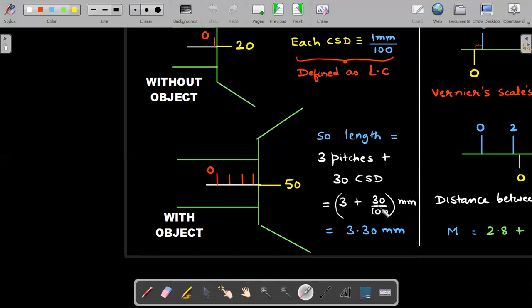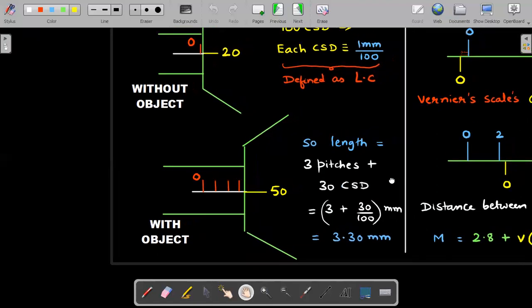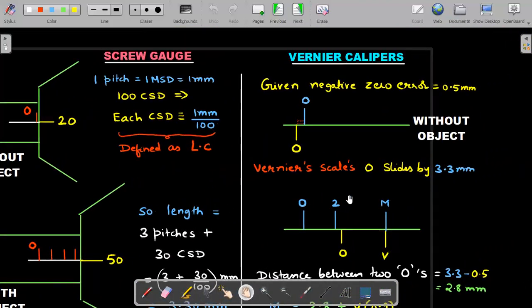So the length of the object, I don't even care how much is the initial thing. I have moved three pitches and 30 CSDs. Three pitches is 3mm, 30 CSDs is 30 divided by 100mm. So the length of the object including the error correction is 3.3mm. I hope you appreciate this part. He never asked us error, I will not calculate the error. So with that 3.3mm object now placed on the vernier calipers.